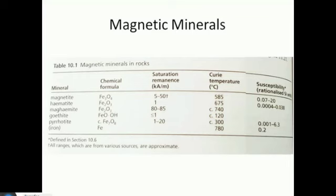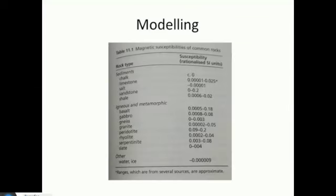Looking at susceptibility values for different rock types: sedimentary rocks have very low values — barely anything you'll notice when you do modeling. When you start to look at igneous and metamorphic rocks, values start to increase. Compared to magnetite, none of these values are very high. Basalt, gabbro, and granites are among the listed types. Dolerite is usually an intrusion and can have quite high susceptibility values.